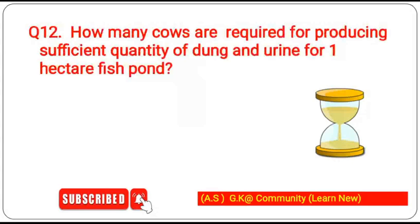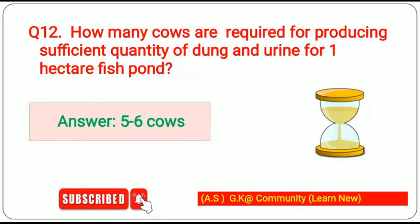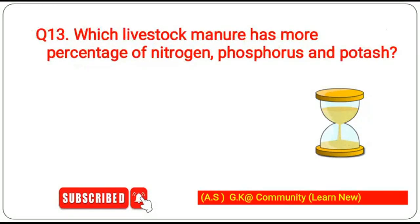Cow manure has lower biological oxygen demand than other livestock manures. Twelfth question: how many cows are required for producing sufficient quantity of dung and urine for one hectare fish pond? The answer is 5 to 6 cows. Thirteenth question: which livestock manure has more percentage of nitrogen, phosphorus, and potash? The answer is goat manure.